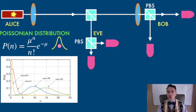The higher the mean photon number in the pulses, the larger the probability of a multi-photon pulse and the less secure the key.